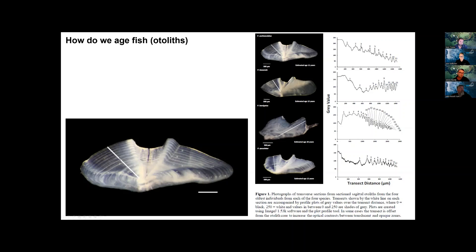The way we determine age is by aging the fish using otoliths — the ear bones extracted from the head. You can see they have rings on them like a tree. We've validated that these are annual growth rings, deposited once a year. On the right you can see the different flathead species and their different age profiles. That's a quick but important species introduction, Jane — it has a lot of relevance to where we'll go with the rest of the questions.